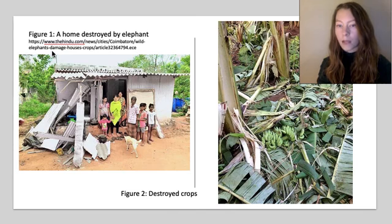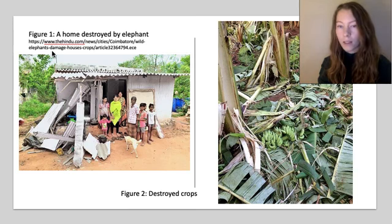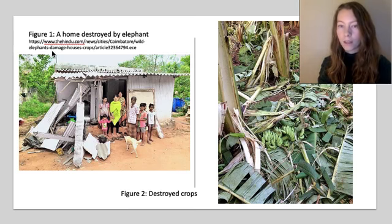It has now been estimated that 400 human deaths and 100 elephant deaths occur each year throughout India. Besides the fatalities, financial loss from crop raiding and infrastructure damage impacts an additional 500,000 people each year. As a result, communities who experience higher rates of human-elephant conflict are frequently less likely to support elephant conservation measures. This makes researching the factors, patterns, and results of conflict an important topic both for elephant conservation and human safety.